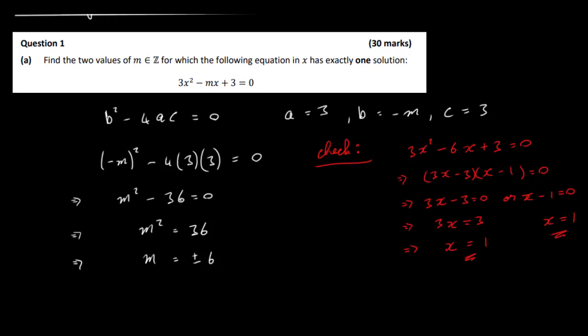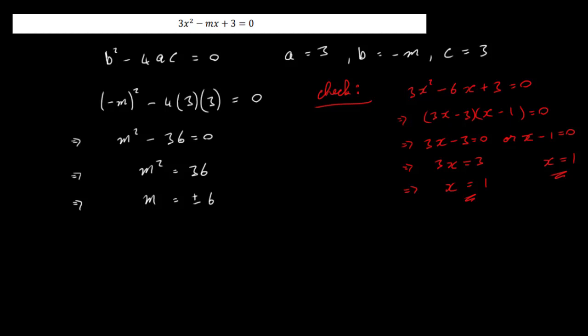Let's try m equals minus 6. We have 3x squared, and minus m becomes minus minus 6, which is plus 6x plus 3 equal to 0. You get the same numbers with different signs, so x equals minus 1 and minus 1 — again only one solution. So if m is plus 6 we get x equal to 1, and if m is minus 6 we get x equal to minus 1. Remember you just had to find the two solutions for m.